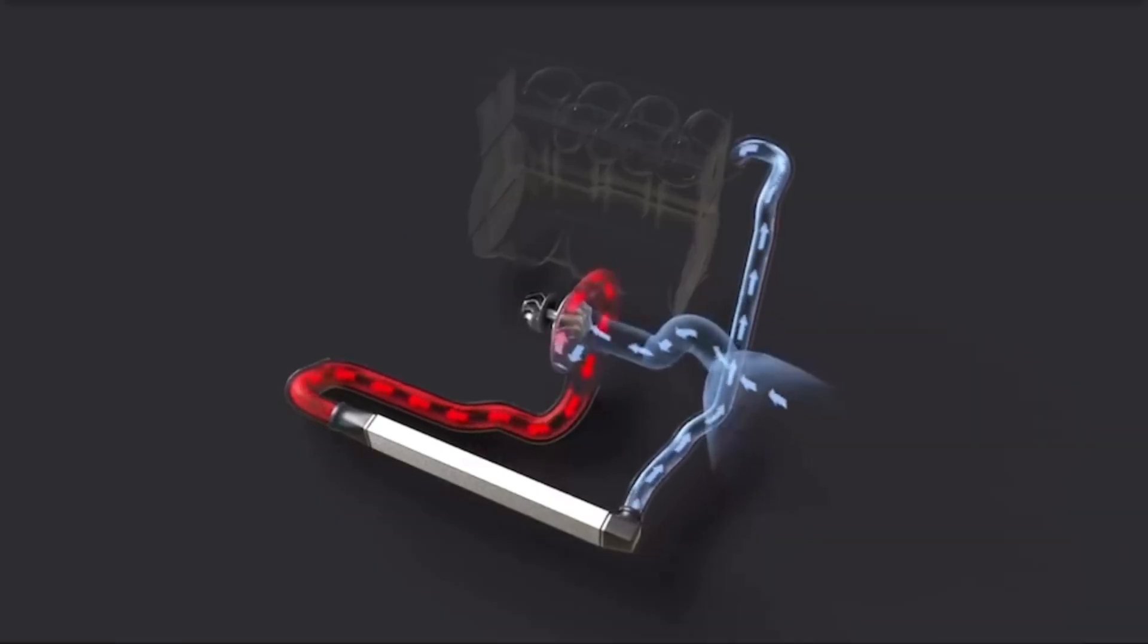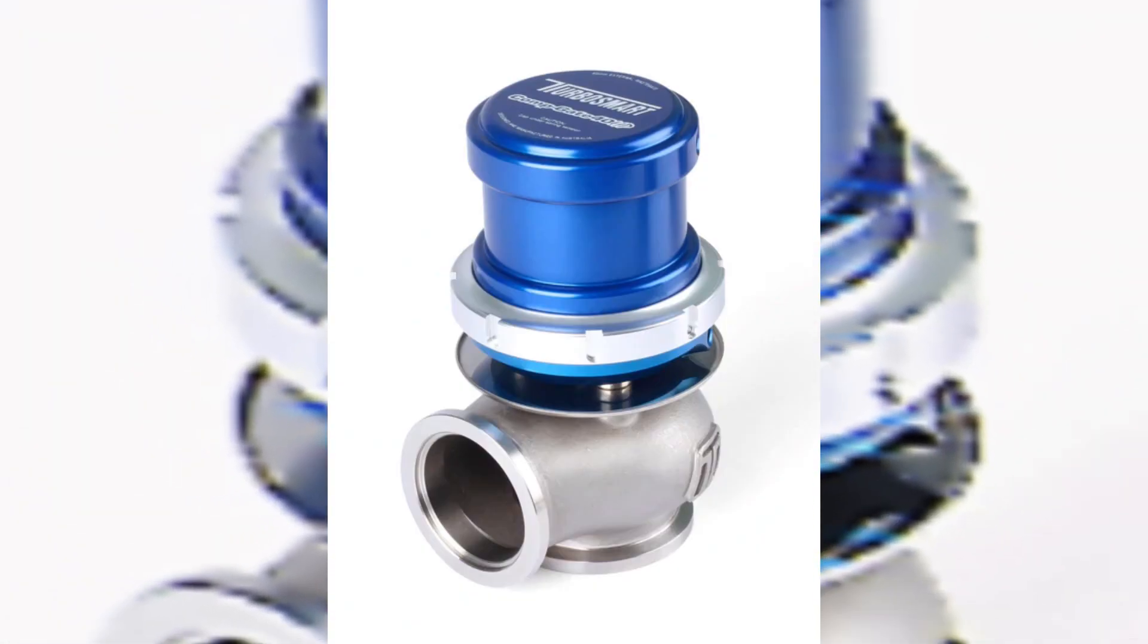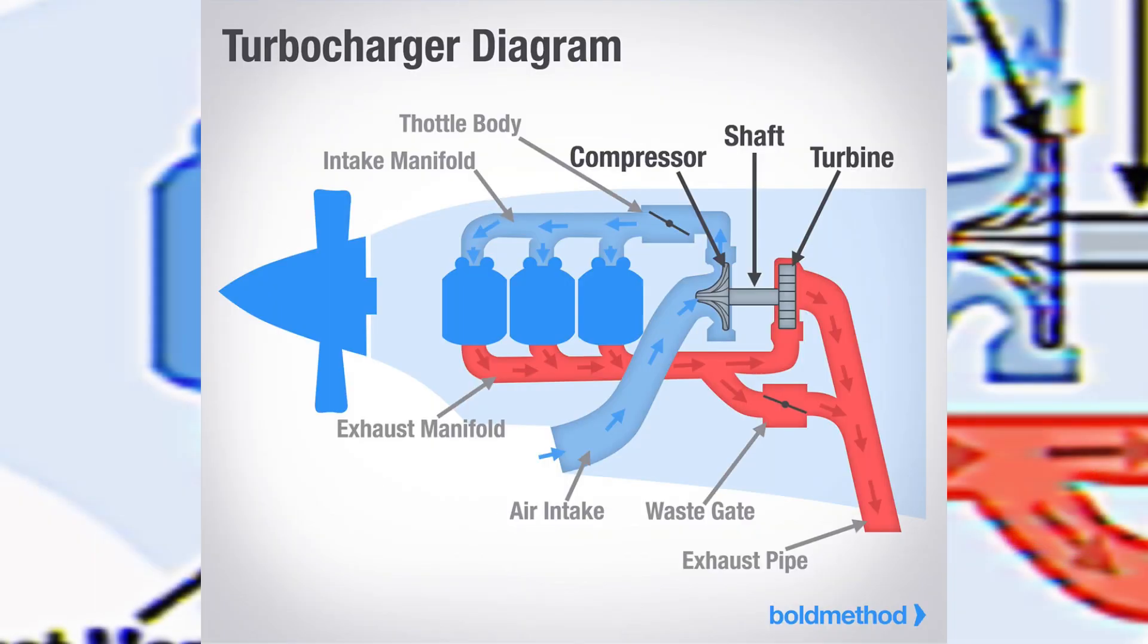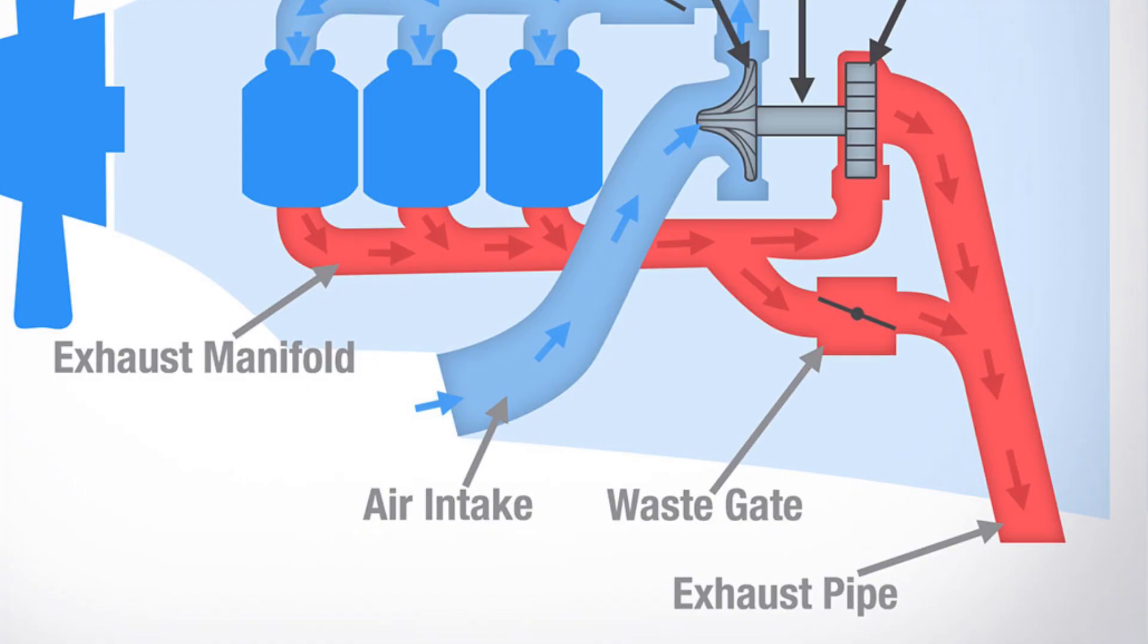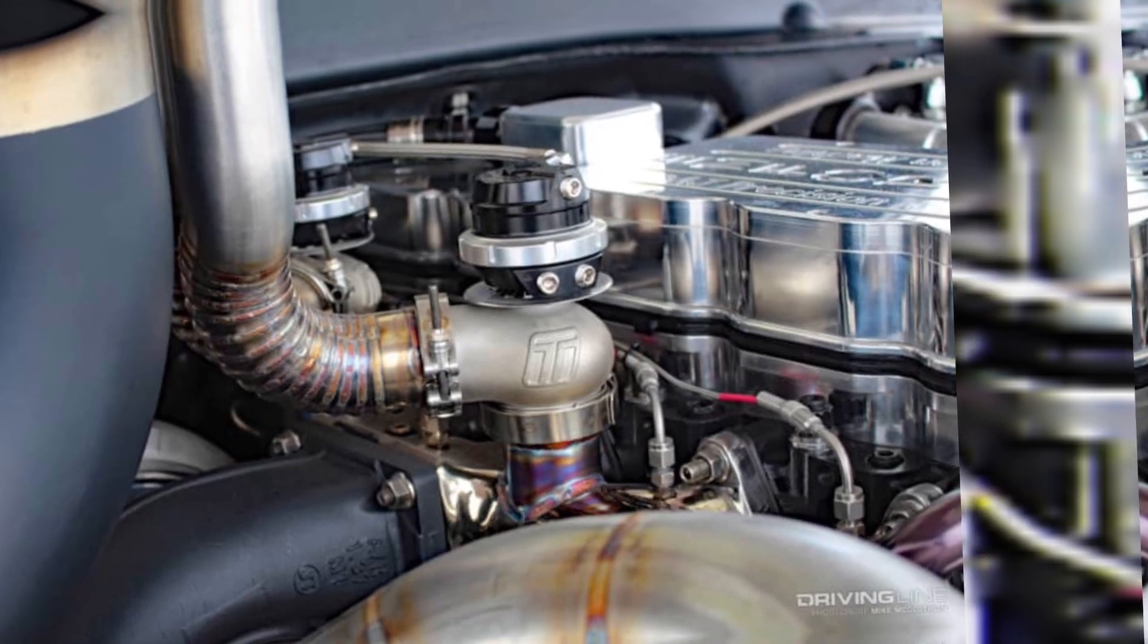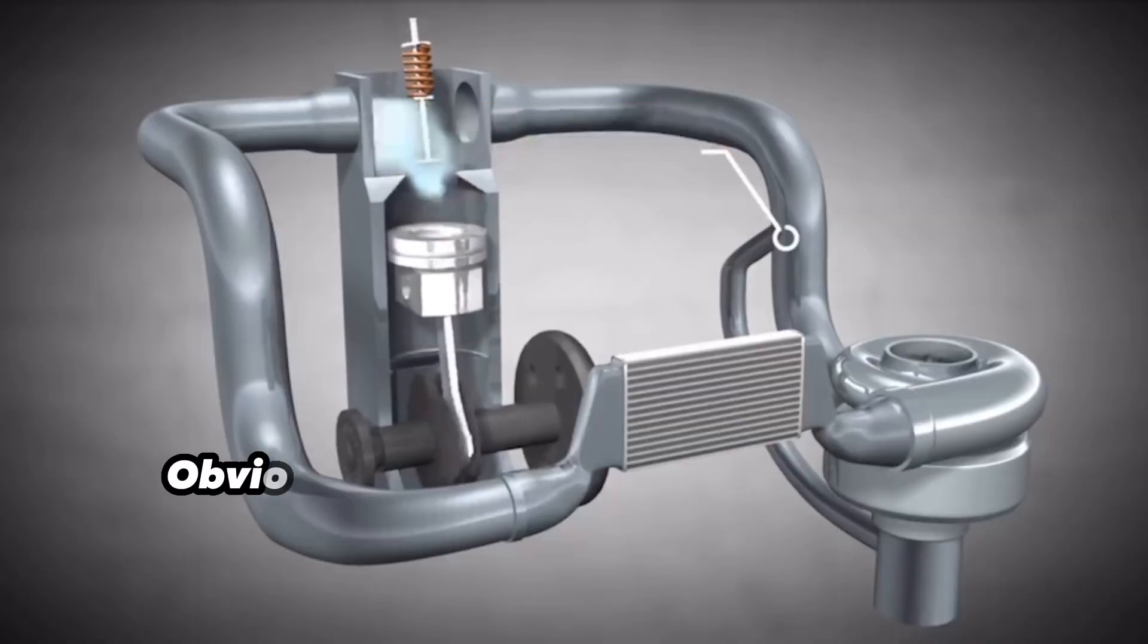Now one thing I almost forgot to mention is the wastegate, which is an important part of regulating how much exhaust gas is traveling through the actual turbo system. It essentially releases undesired exhaust gases, preventing the turbine side from spinning in excess and creating too much boost.